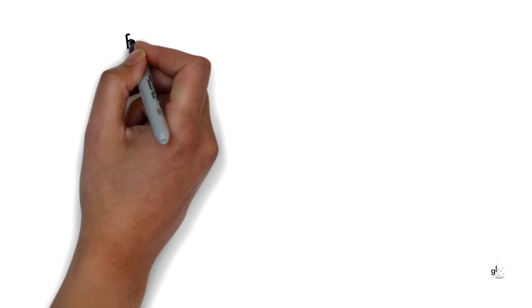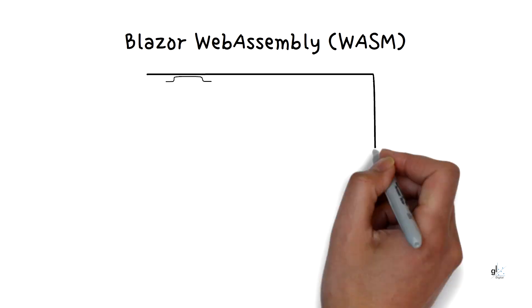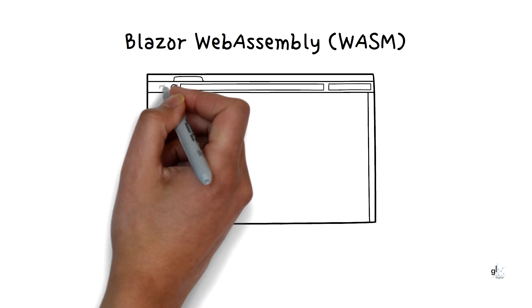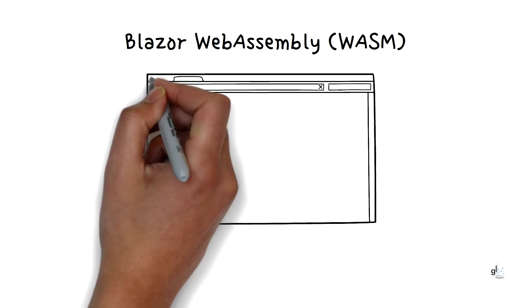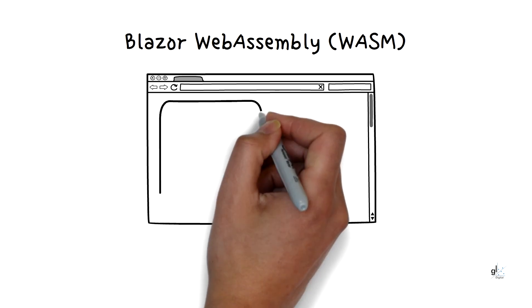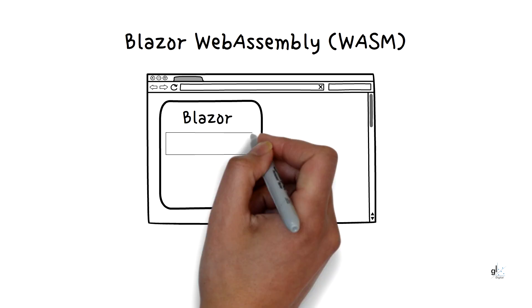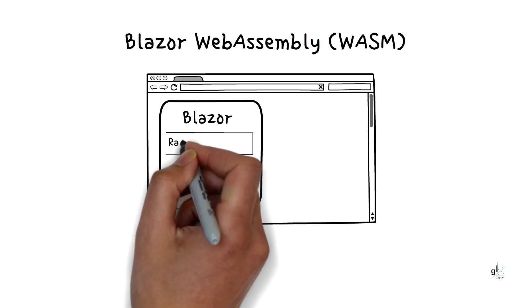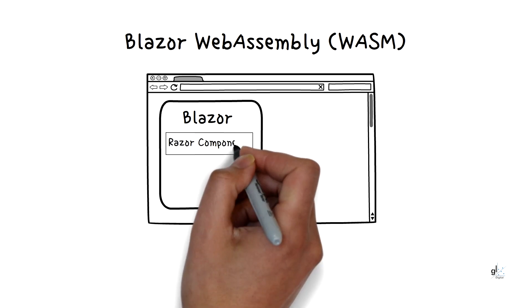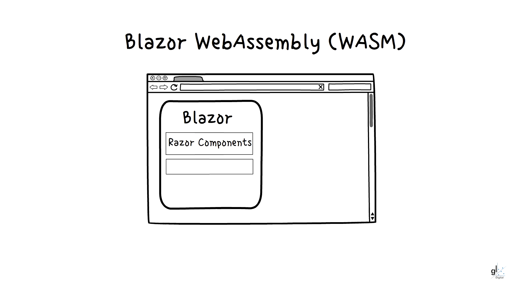Blazor WebAssembly, or WASM, apps run client-side in the browser on a WebAssembly-based .NET runtime. The Blazor app, its dependencies, and the .NET runtime are downloaded to the browser. So Blazor WebAssembly is a single-page app (SPA) framework for building interactive client-side web apps with .NET. .NET developers can now develop single-page applications in C# rather than being restricted to using JavaScript frameworks like Angular, React, or Vue for developing such applications.